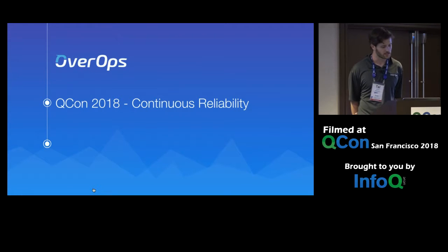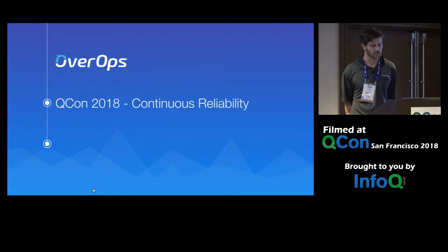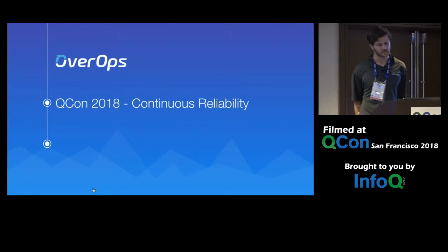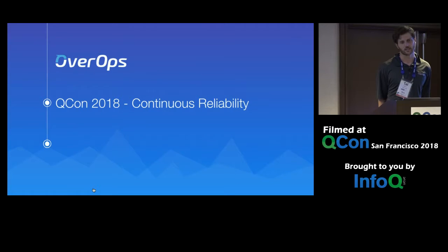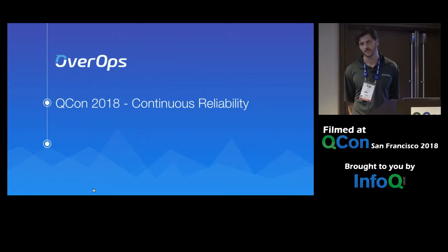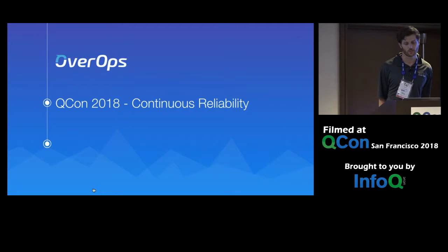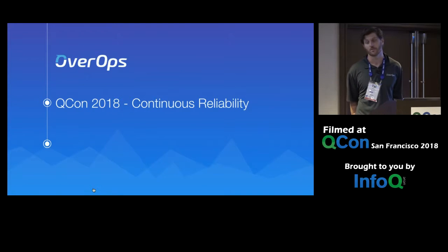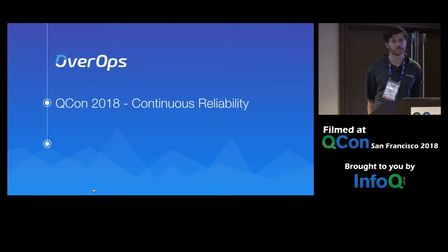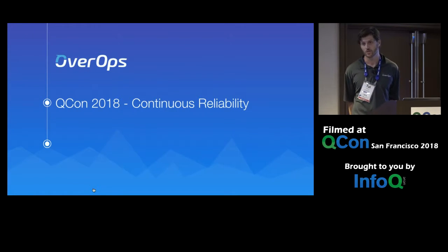A bit about myself — I've been working in this space going on 18 years now, and especially for the last seven or eight years focusing heavily on areas of research in static and dynamic code analyses, performance optimization with a strong focus on the JVM and the CLR for companies working at scale. We blog a lot at overops.com and post a lot of research there.